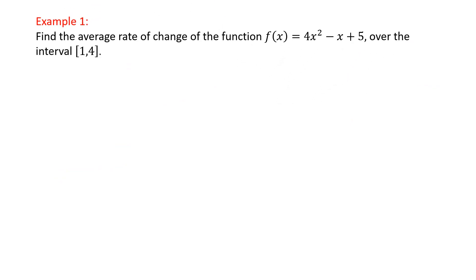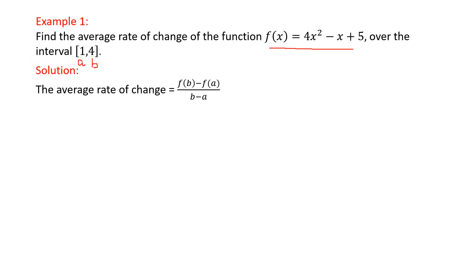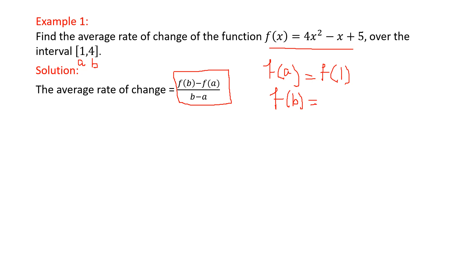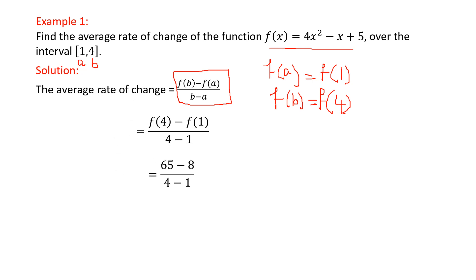Let us see our first example. Find the average rate of change of the function f(x) = 4x² − x + 5 over the interval [1, 4]. Here a = 1 and b = 4. We know the rate of change is given by f(b) − f(a) divided by b − a. So we calculate f(1) and f(4), substitute into the formula, and we get 16 − 8 upon 4 − 1. By simplifying this, we get 19 as our final answer.